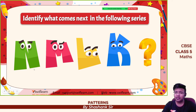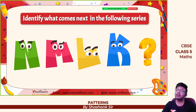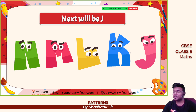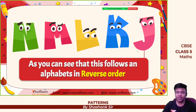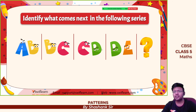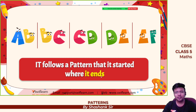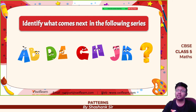Identify which comes next in the series: I, J, K, L, M, N — it is in reverse order, so J will come next. Identify what comes next: A, B, E, F — E, F is the answer; it follows a pattern where it starts where it ends. Identify what comes next: A, B, C is missed, D, E, F is missed, G, H — the next missing group should be M, N.